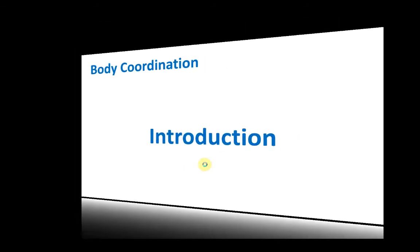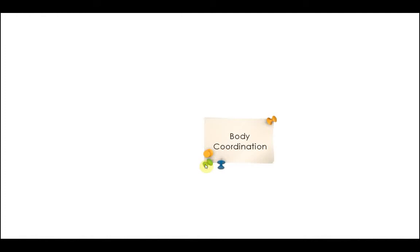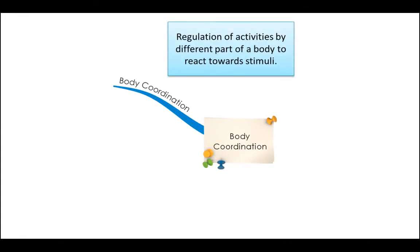This is the second chapter of SPM Form 4 Science — Body Coordination. We're going to begin with the introduction to body coordination. Let's have a look at the mind map of this chapter. Body coordination is the regulation of activities by different parts of the body to react towards stimuli. Body coordination is performed by two systems: the nervous system and the endocrine system.